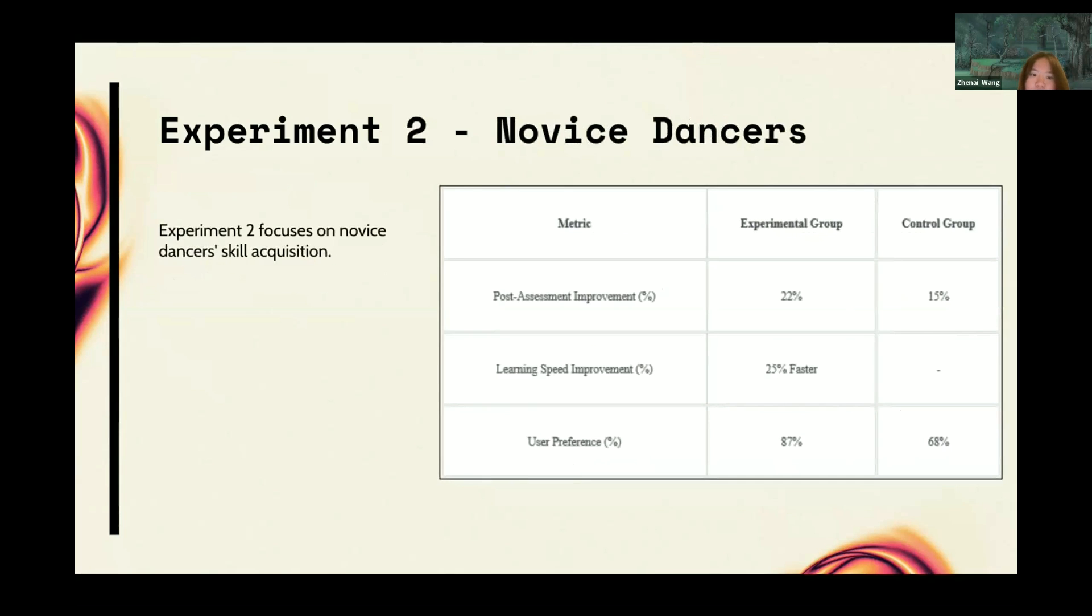Experiment 2 focused on novice dancers' skill acquisition. The program led to a remarkable 22% skill improvement in the experimental group, outperforming the control group's 15%. Error corrections were accelerated by 24%, exemplifying enhanced learning efficiency. Novice participants reported enhanced confidence and skill advancement using the program.